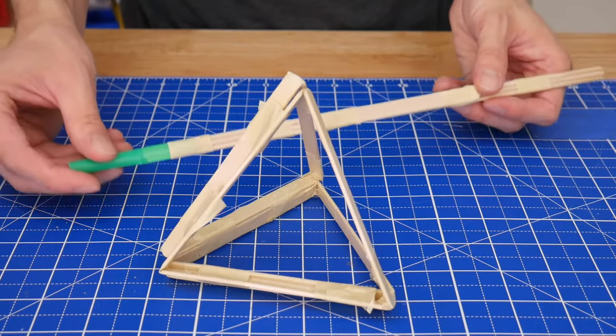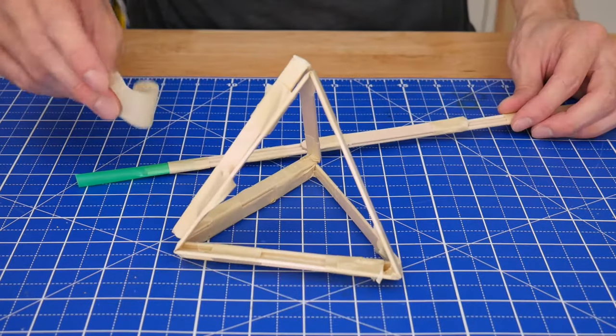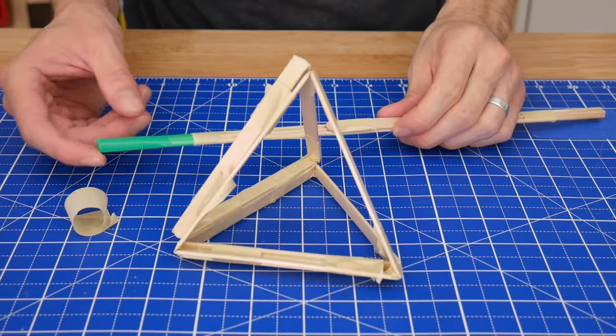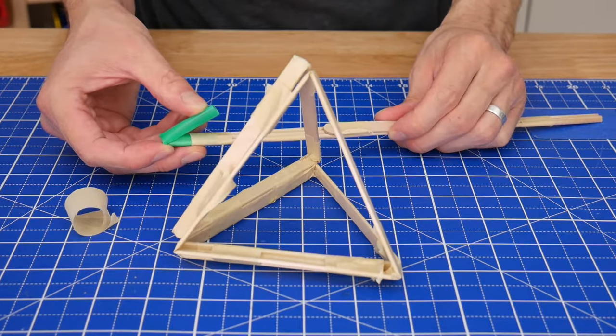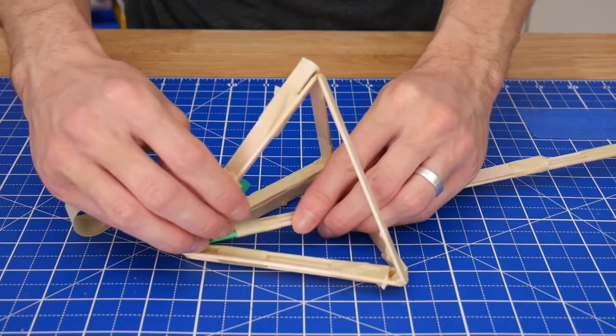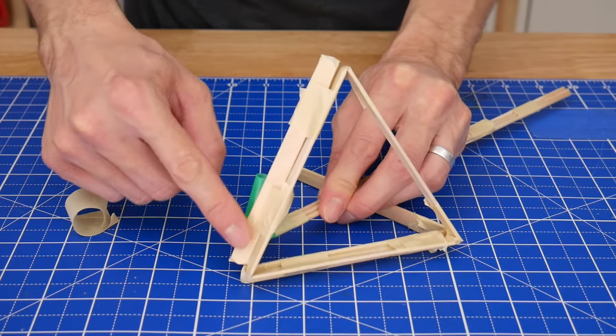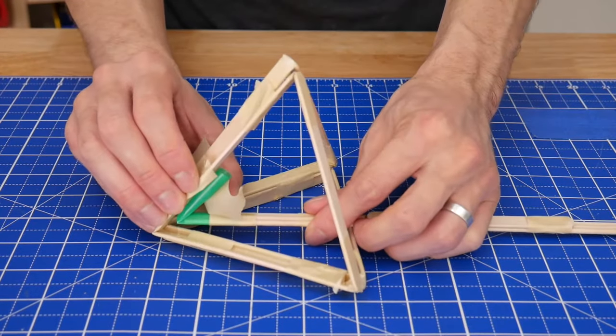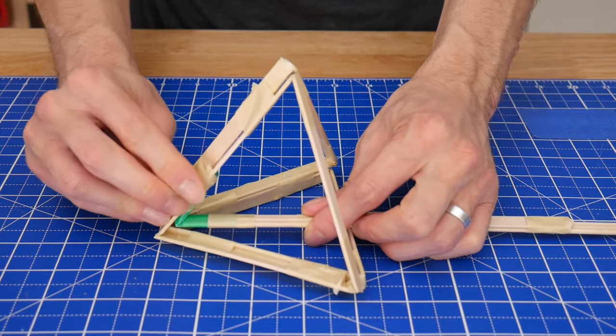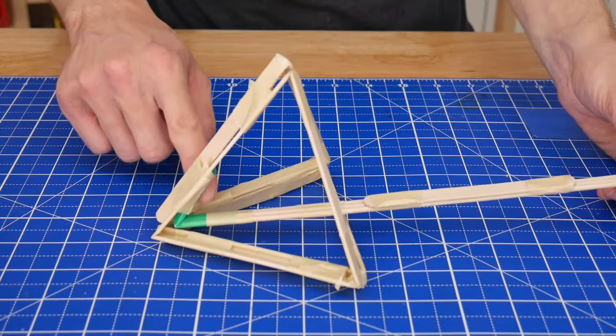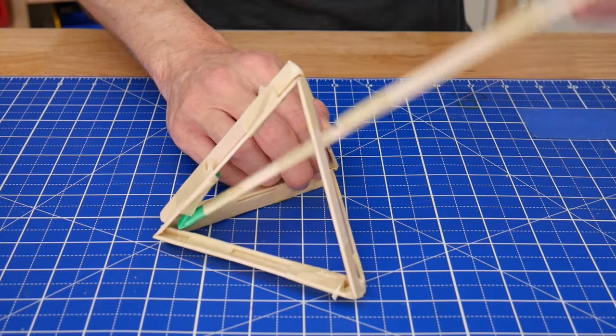Now we're going to install the catapult arm into the catapult. First, get a piece of tape ready, then bend the straw back like this and position it inside the catapult so that the straw is next to the part of the frame where the two triangles meet. Then tightly tape the straw onto the catapult frame. The plastic straw creates a sturdy and flexible hinge.